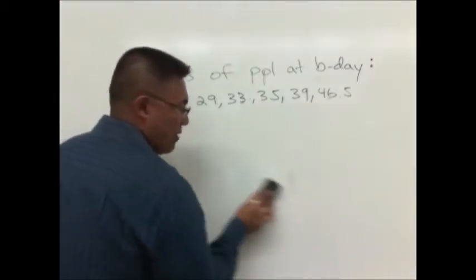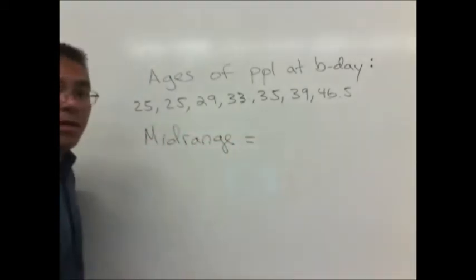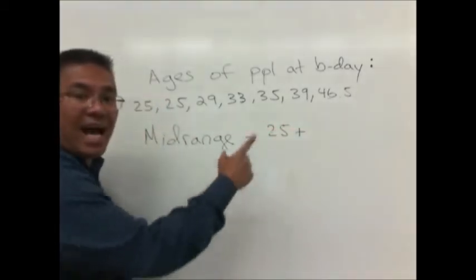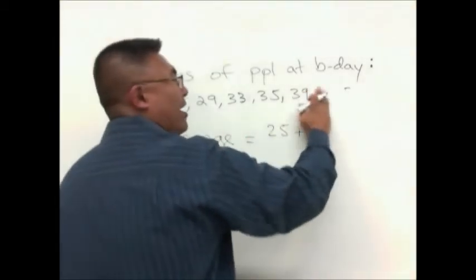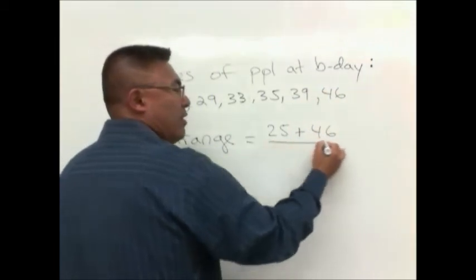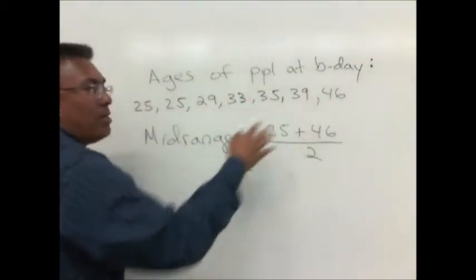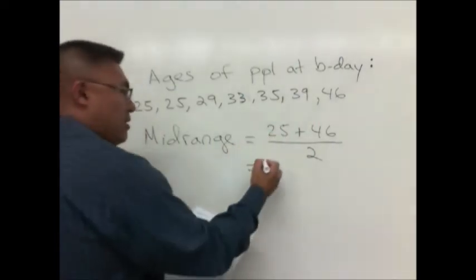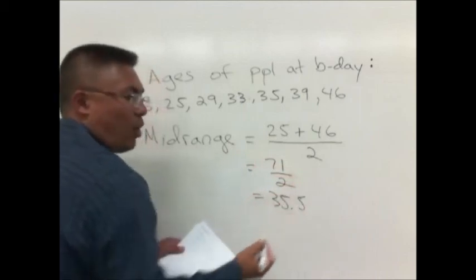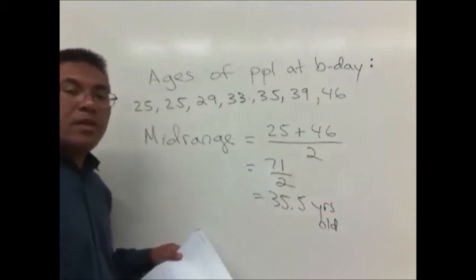And then the last thing is the mid-range. Mid-range is short and easy. You take the low value, which is 25, plus the high value of your data set, in this case it was 46, divided by 2, and that's going to give you the value that's right in the middle of your range. So 25 plus 46 is 71, divided by 2 equals 35.5. And that's good because we have our one additional decimal place. Years old.